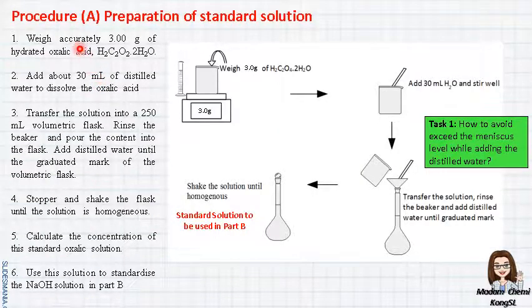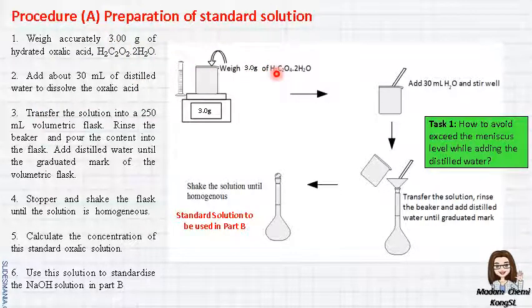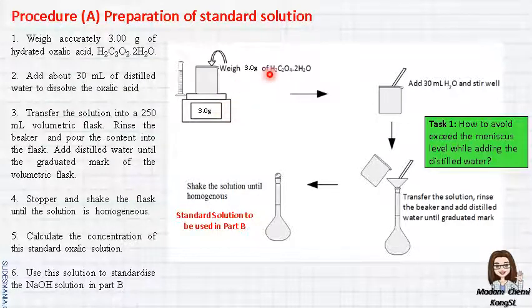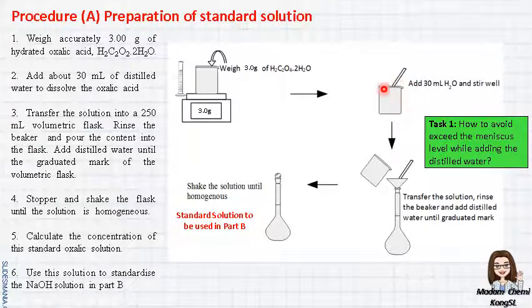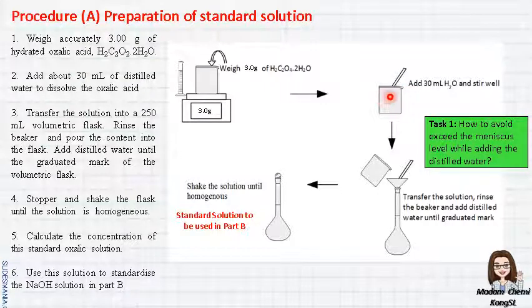Procedure A: preparation of standard solution. These are the steps from your lab manual. Step number one, you have to weigh three grams of oxalic acid. From the last experiment, you already learned how to use the analytical balance, so the step is the same. Make sure you tare first, then only you start to measure three grams of oxalic acid. Next, you transfer distilled water into the beaker and stir the solute with the distilled water — the solvent H₂O — until the solution becomes homogeneous, meaning that there is no oxalic acid solid anymore.